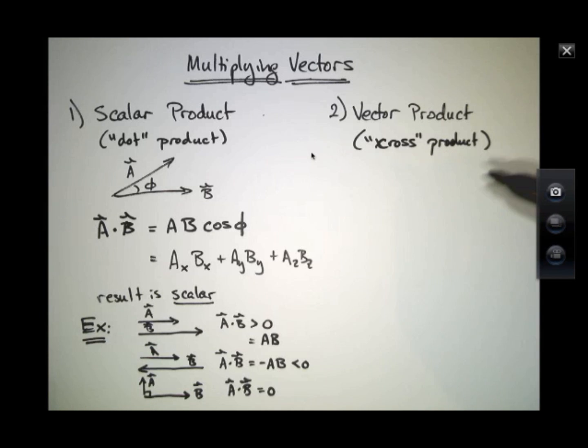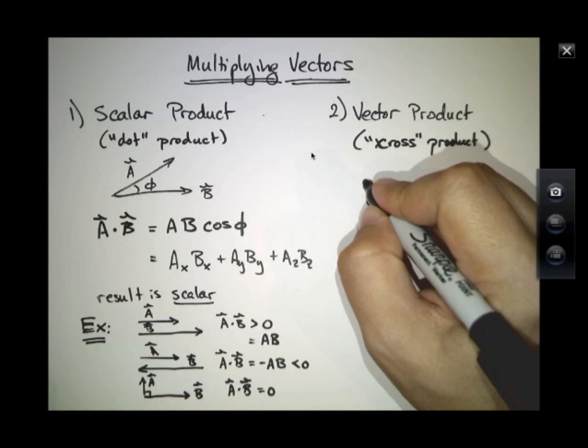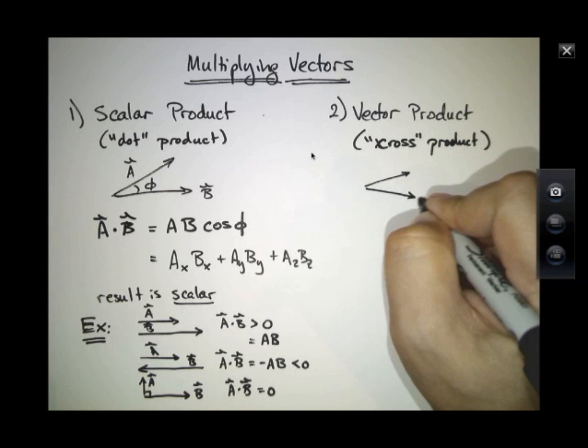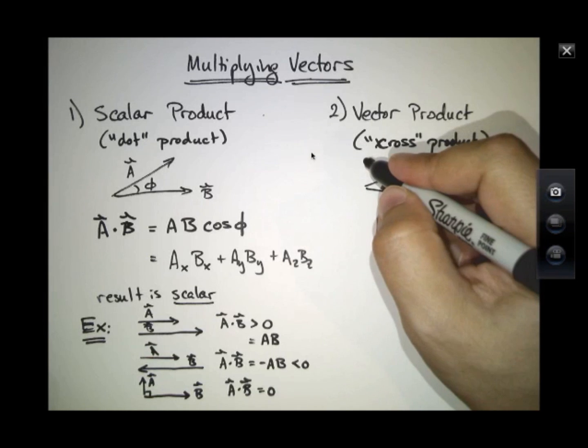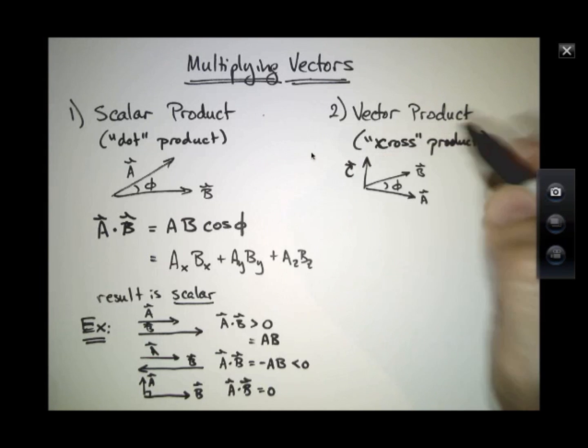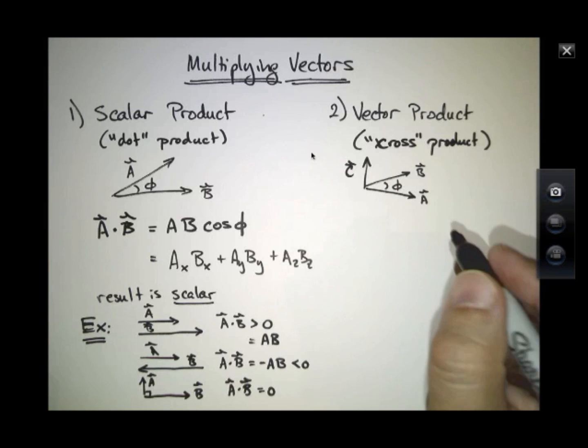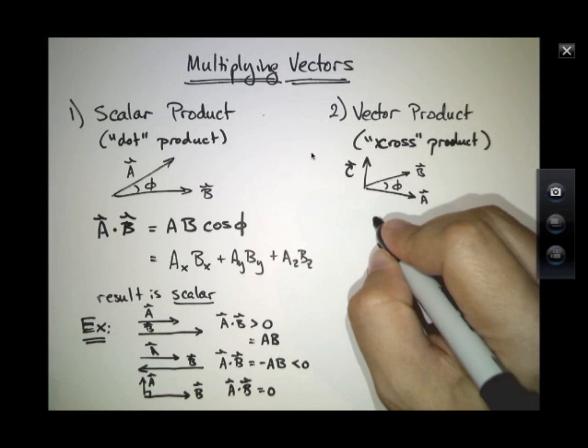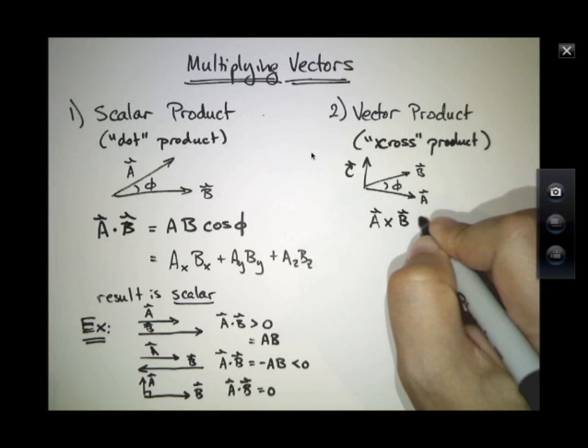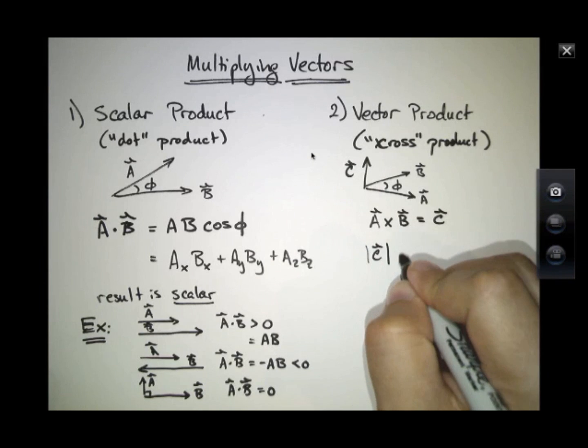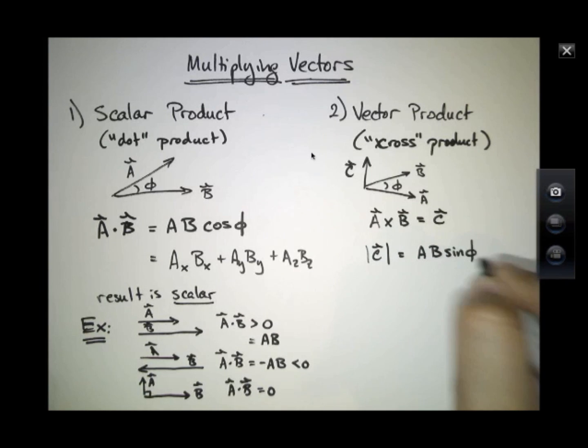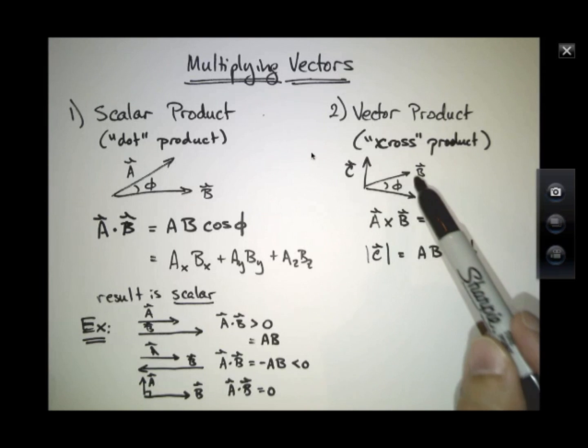The second product is called the cross product. And if A and B are two vectors with a relative angle phi between them, the cross product for A and B is a new vector. And the magnitude of this new vector will be A times B times the sine of the angle between them. I haven't described how to determine the direction of this new vector, but it points up and out of the plane between A and B.